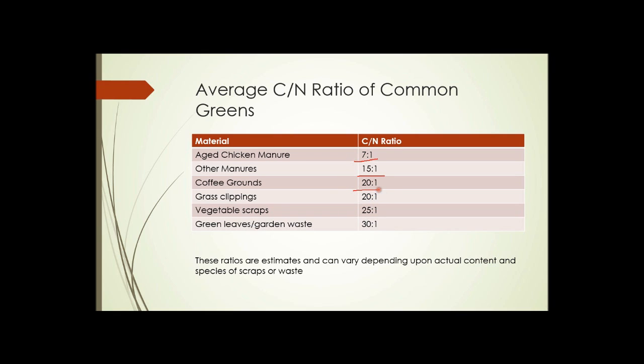Coffee grounds, 20 to 1. That's pretty close to the ratio we're looking for. Grass clippings, 20 to 1. Vegetable scraps, 25 to 1. And green leaves and garden waste, about 30 to 1. These last two are pretty close to what we want as the ideal mix.